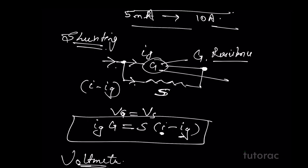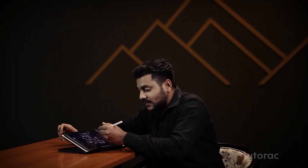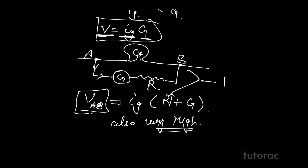One should keep in mind that ammeter will always be connected in series with the load resistance, while voltmeter is a device that we will always connect in parallel to the load resistance.